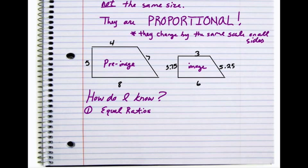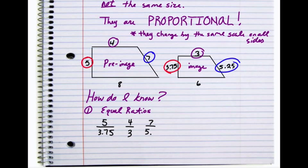On the pre-image I have a side which is a value of 5. Comparing it to the image, that same side has a value of 3.75. So that would be my first ratio, 5 compared to 3.75. The next corresponding sides would be 4 and 3. The next set is 7 and 5.25. And lastly, 8 and 6.